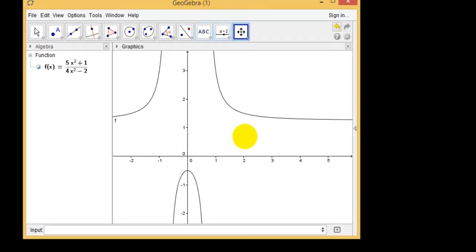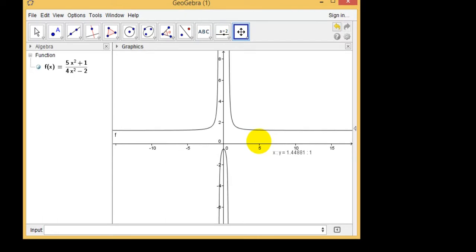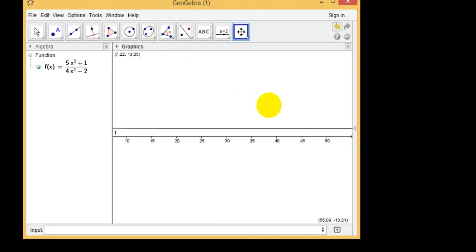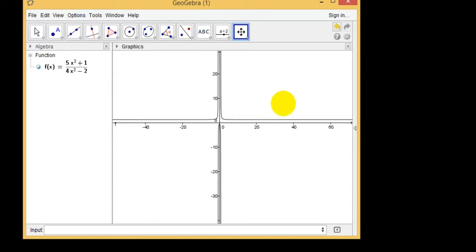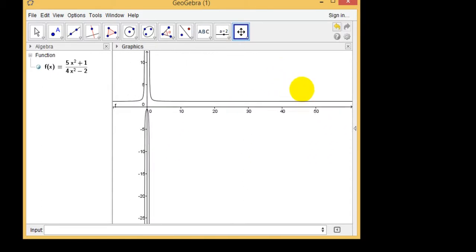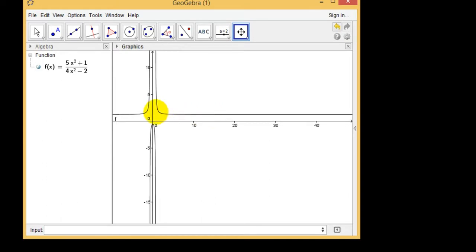So if you have a look, if I zoom out, if I keep zooming out on the graph and I move to the right, basically we're looking for, as x gets bigger and bigger, what does the y value become?